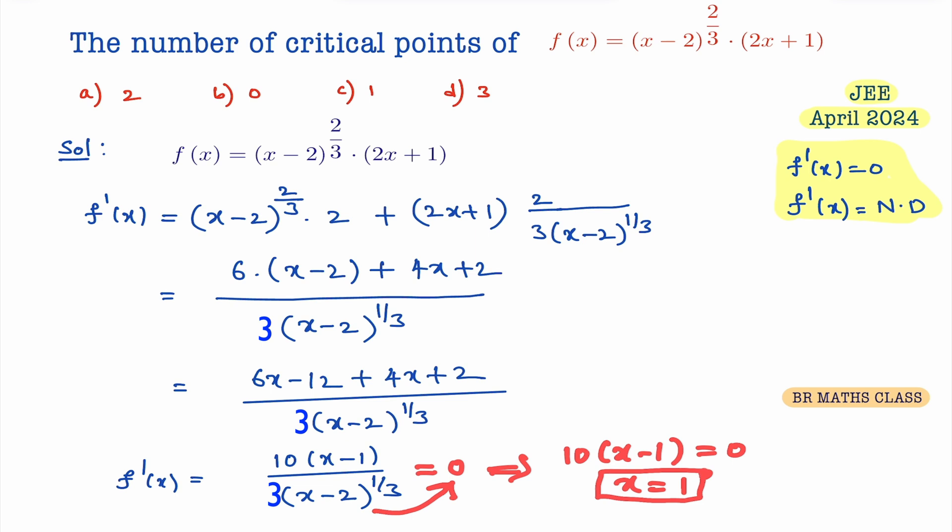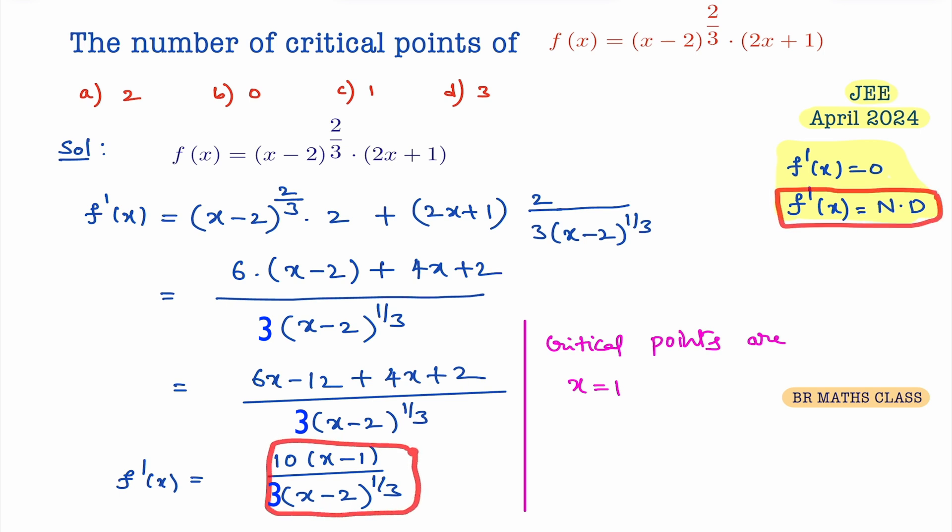Generally, many students will confuse here. As f'(x) equals 0, only one critical point, they will mark this option, but it is wrong. Here, critical points: x equal to 1, not only that. You check in f'(x), any x value is there where function is not defined. See here, when I put x equal to 2, this denominator will become 0. Then f'(x) is not defined. So we treat x equal to 2 also as a critical point.